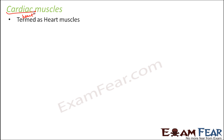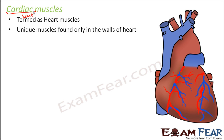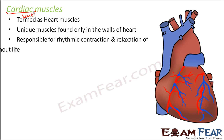Let us now look at the third type of muscle tissue — cardiac muscles. The term cardiac is related to the heart, so the muscles present in the human heart are called cardiac muscles, also known as heart muscles. The heart has a uniqueness in that it is able to beat continuously without being controlled by the nervous system, and this happens due to the presence of these muscles on the walls of the heart. They are responsible for the rhythmic contraction and relaxation of the heart throughout life, and this rhythmic contraction and relaxation is independent of the nervous system.